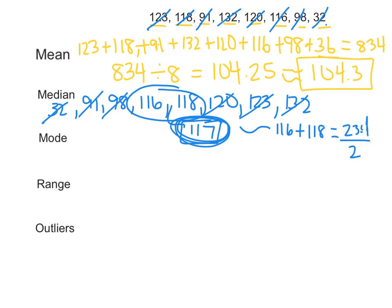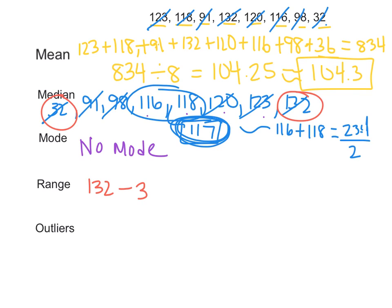For the mode, let's go through and see if we have any numbers that occur more than once: 32, 91, 98, 116, 118, 120, 123, and 132. There is no mode in this case because there's not a number that occurs more than the others. The range is the biggest minus the smallest: 132 minus 32, and that gives us a range of 100.